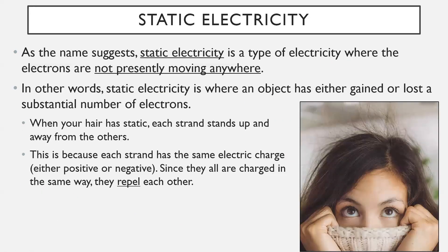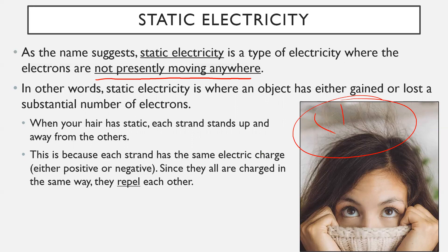Now, finally, into static electricity. As the name suggests, static electricity is a type of electricity where the electrons are not presently moving — they've just been stored in an object. An object has either gained or lost a substantial number of electrons. A quick easy example: when your hair has static, each strand stands up and away from the others. What's really happening is every single one of your hair strands has the same charge — let's suppose they were all positively charged. Since they all have a positive charge, by the law of electrical charges, they're going to be repelling each other.